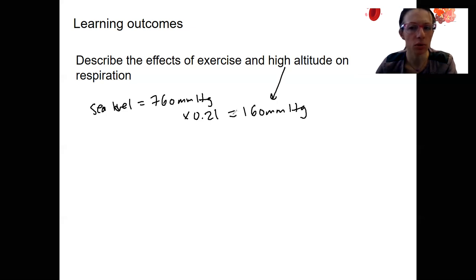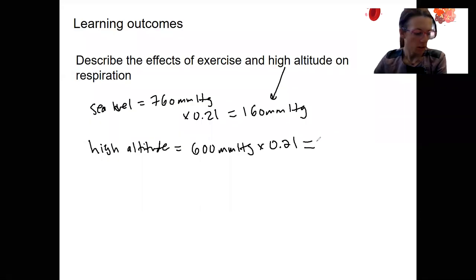Go up to high altitude. Let's say we're at 600 millimeters of mercury total. There's less pressure up at high altitude. So this one is 126 millimeters of mercury. It's lower, right? That's the point. It's going to be harder to get oxygen.